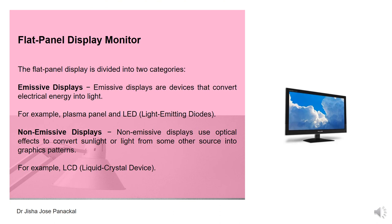Flat panel displays are divided into two categories: emissive displays and non-emissive displays. Emissive displays are devices that convert electrical energy into light — for example, plasma panels and LEDs (light emitting diodes). Most new systems are based on plasma technology or LED. Non-emissive displays use optical effects to convert sunlight or light from some other source into graphic patterns — for example, LCD, that is liquid crystal displays. These are the different categories of flat panel display monitors.